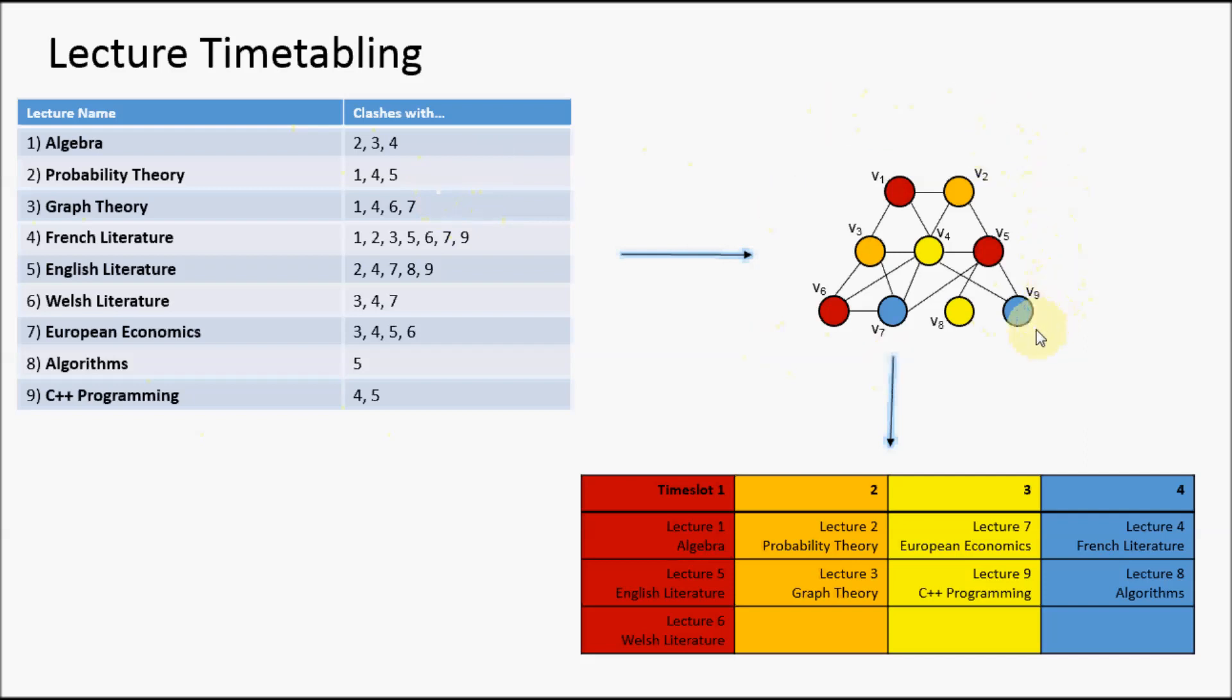Now we can color this, and once we've done that, each color will correspond to a time slot. We're able to schedule algebra, English literature, and Welsh literature at the same time because none of them clash. No student will be required to be in more than one place at a time.